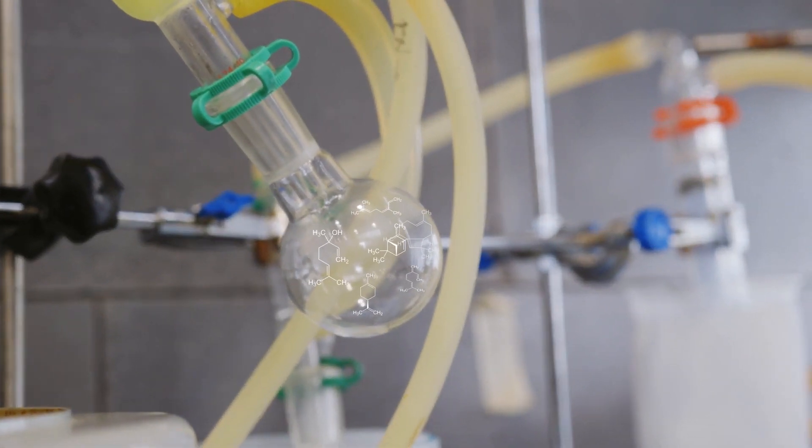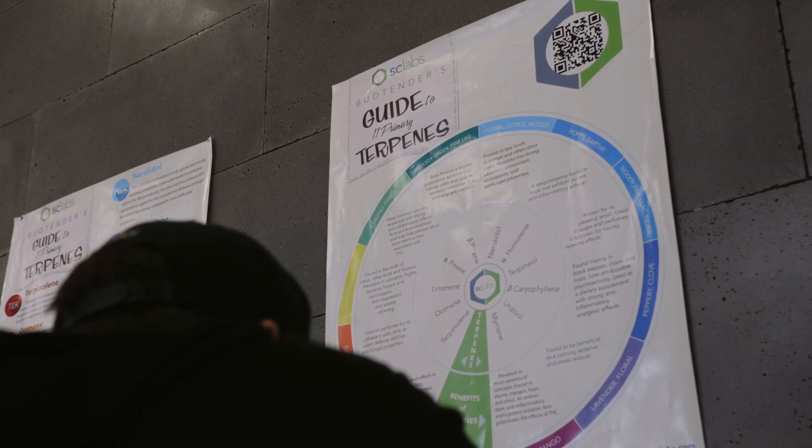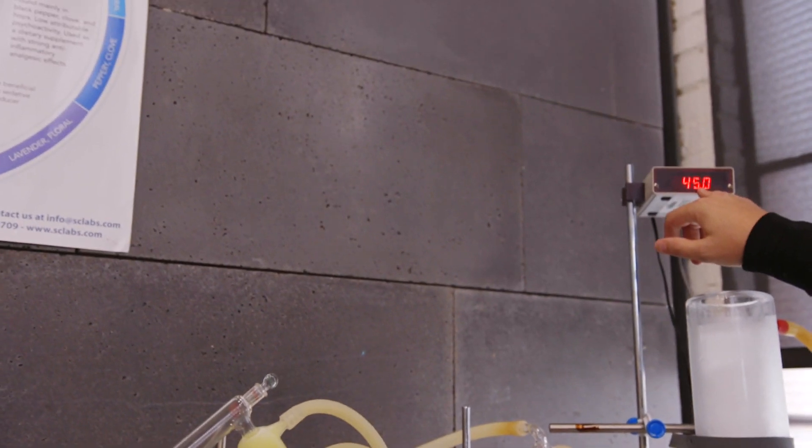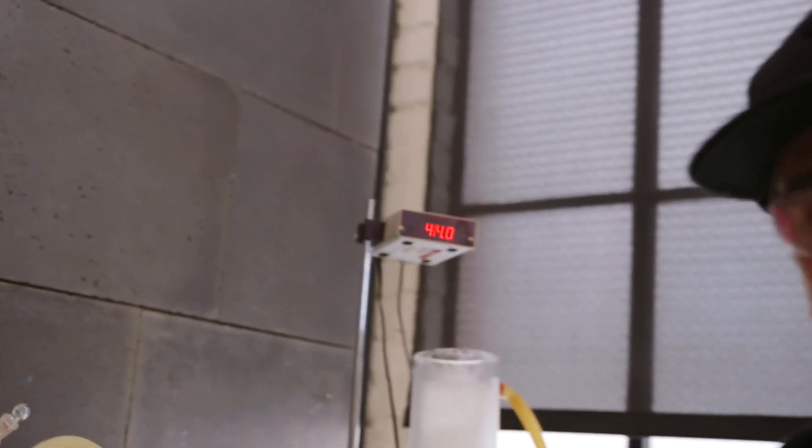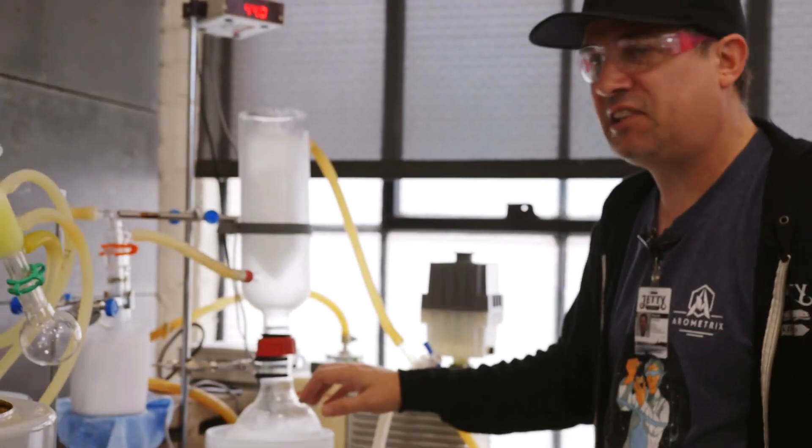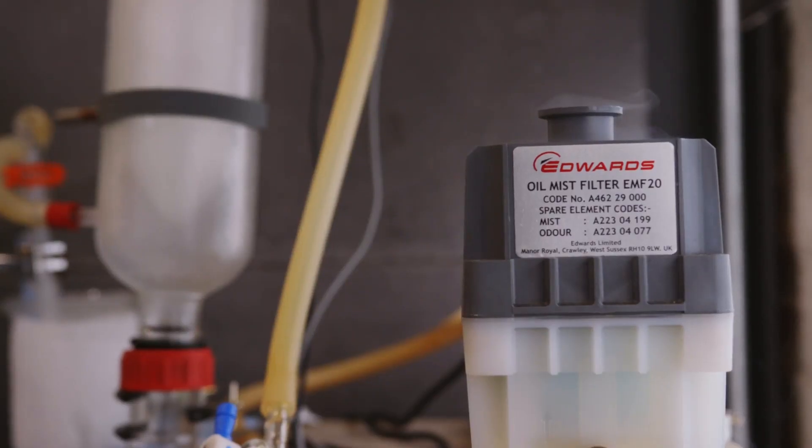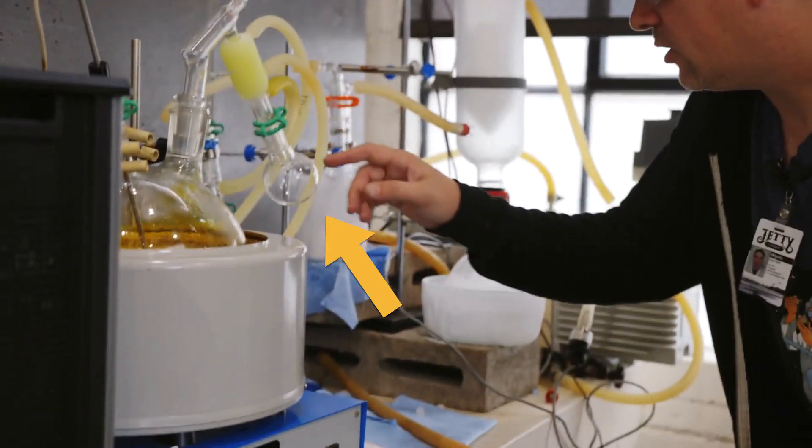I have several different traps to isolate different kinds of terpenes. Right now, we're running at 45 millimeters mercury, and that's because we're getting a lot of gases coming off. They're going to condense in here. This is kind of my waste area. The good stuff is going to be here and here.